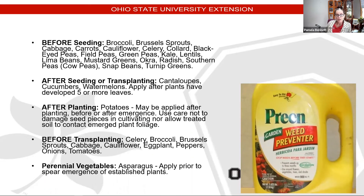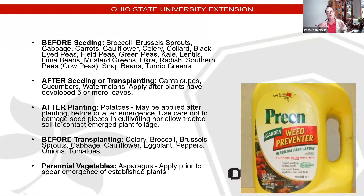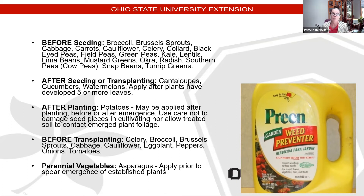Here's the Preen label. You can see broccoli and Brussels sprouts are listed — you can use Preen before seeding and it's safe. After seeding or transplanting cantaloupes and cucumbers, you have to apply after five leaves or more. Potatoes — after planting. Before transplanting celery, broccoli, Brussels sprouts, and perennial vegetables such as asparagus, apply prior to sprigging. You really need to read that label so you know when to apply it. This is a garden weed preventer, so the soil must be clean and weed-free. This will not work on perennial weeds — dandelions, thistle, and bindweed will come right up through it. It's specifically for annual weeds like winter and summer annuals.